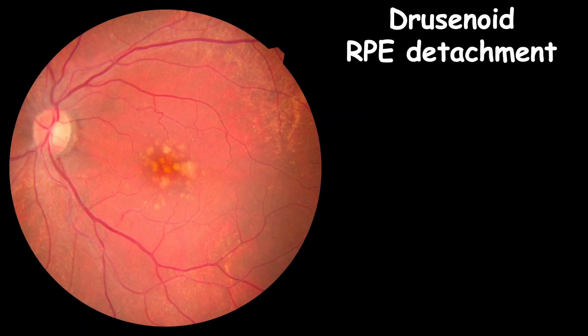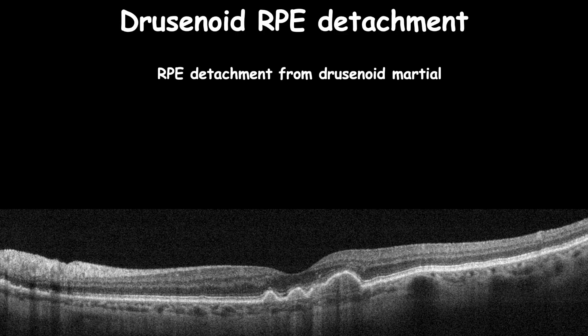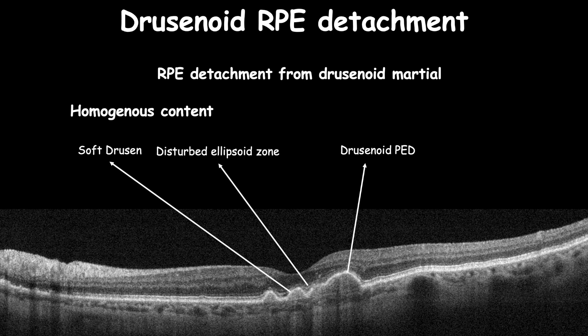Drusen can also come in different shapes, such as reticular pseudodrusen, which can be a sign of developing advanced or wet AMD, and drusenoid RPE detachment, which features large size with homogeneous content and a relatively benign character. It takes years to induce a choroidal neovascular membrane or advanced AMD. On OCT, it shows RPE detachment with drusenoid homogeneous content, along with disturbed ellipsoid zone and pigment migration.